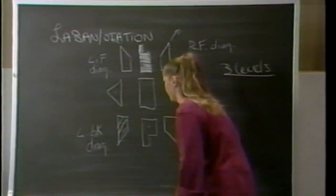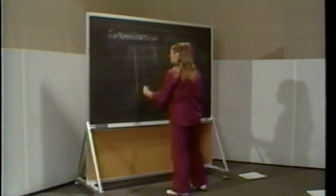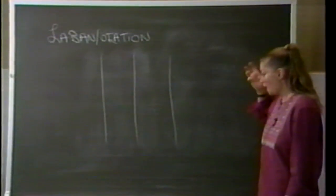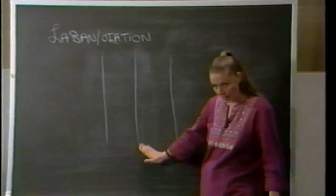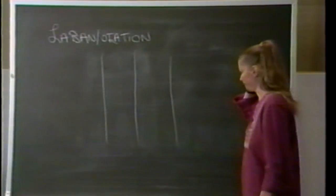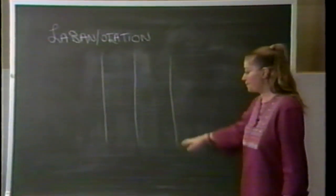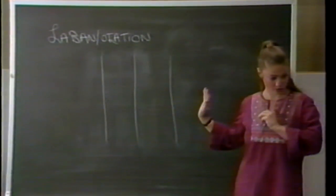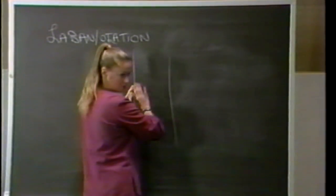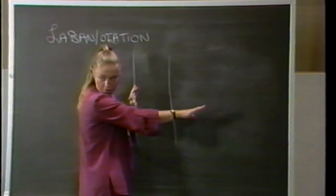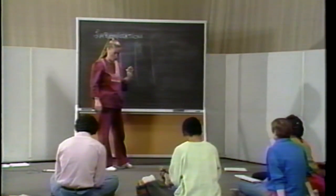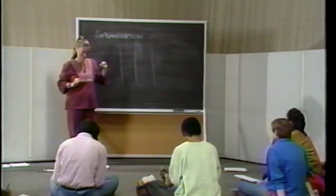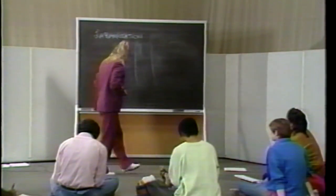Let's put these symbols on a staff and see how they get used. The symbols are put on a staff of three vertical lines, and when you're reading, you start from the bottom and read upwards. The center line of the staff is very much like a center line in your body dividing right from left. Everything to the right side of the center line is about your right arm, right leg, right shoulder. Everything to the left of this center line is about the left side of your body.